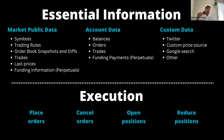Account data includes your balances, order status, and an order management system we'll discuss shortly. It also includes private trades and, for perpetual markets, funding payments your account has paid or received. You can also add custom data — Twitter data, custom price sources like a machine learning model predicting price, a Google search feed, or other custom inputs. The most common execution actions are placing orders, canceling orders, opening positions, and closing positions, along with things like setting leverage.